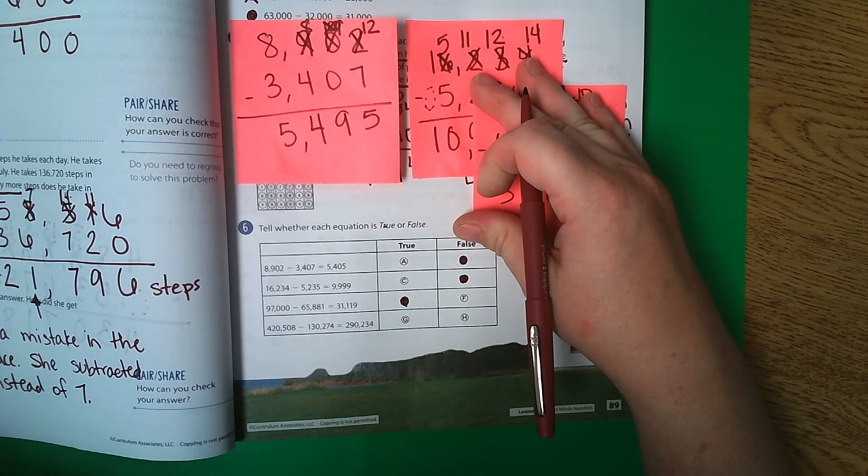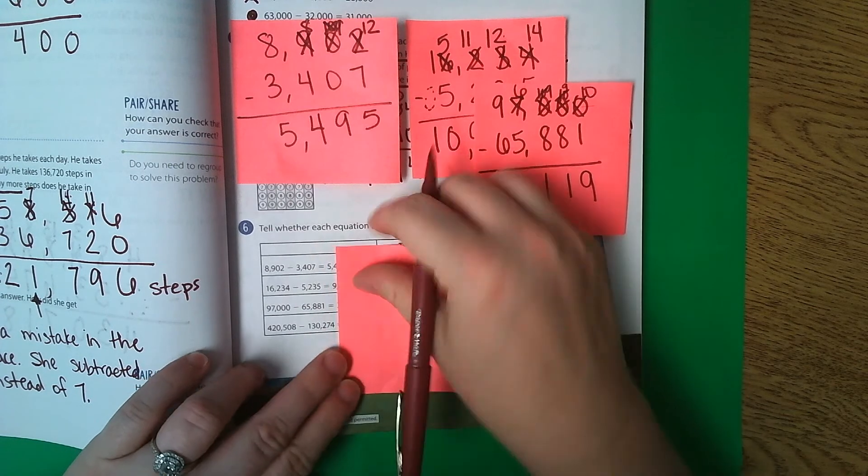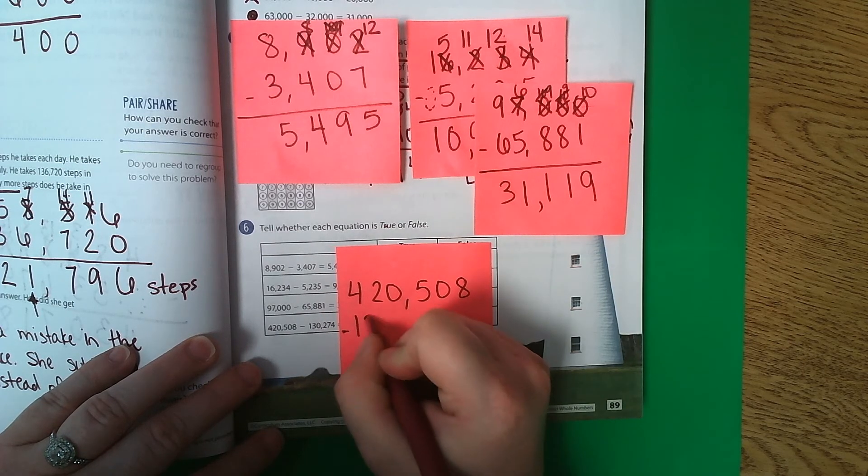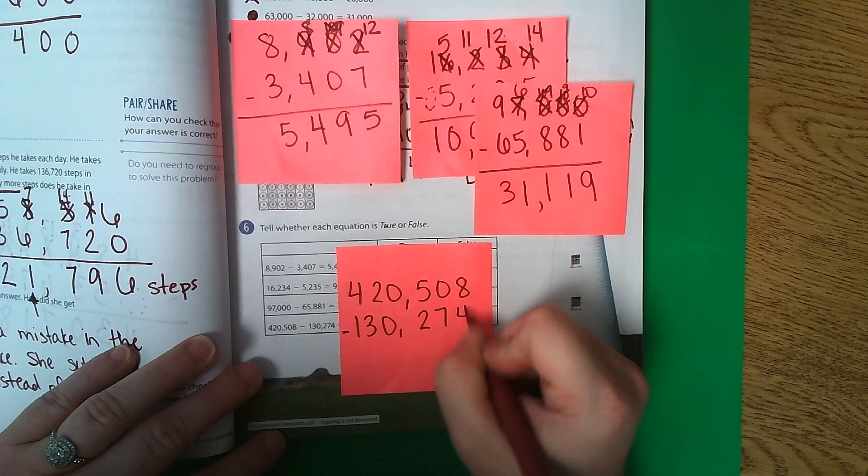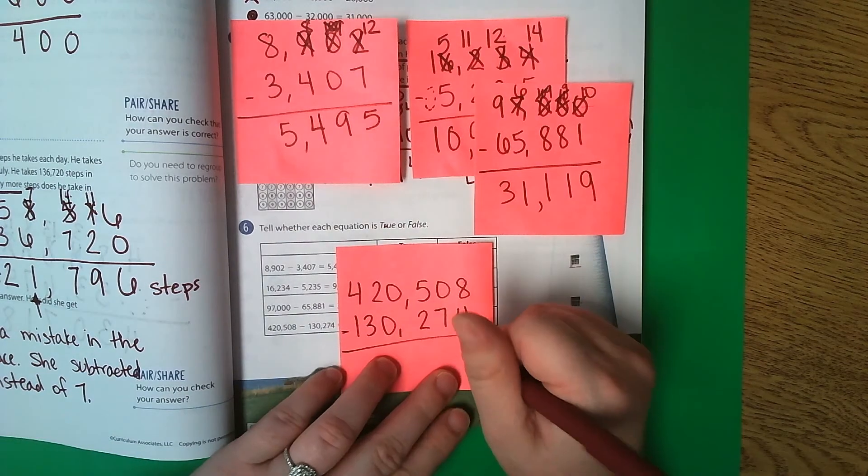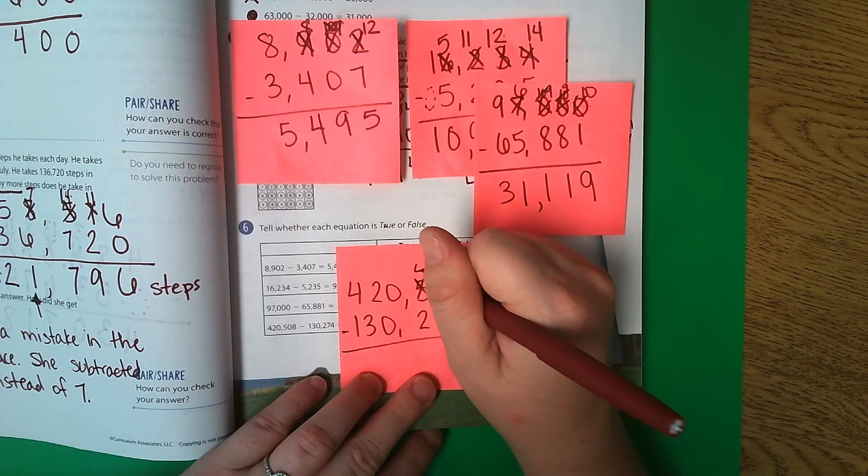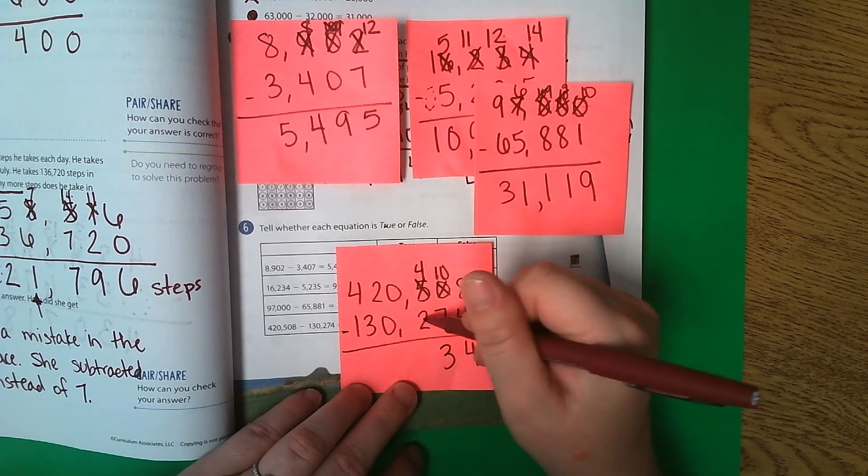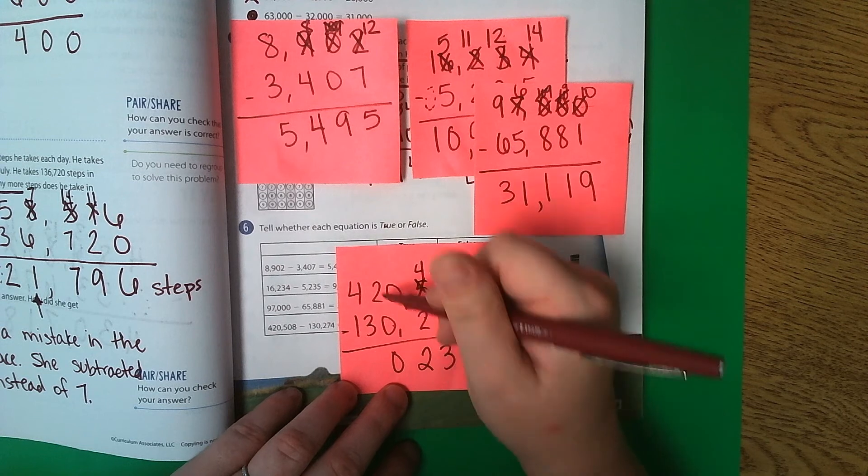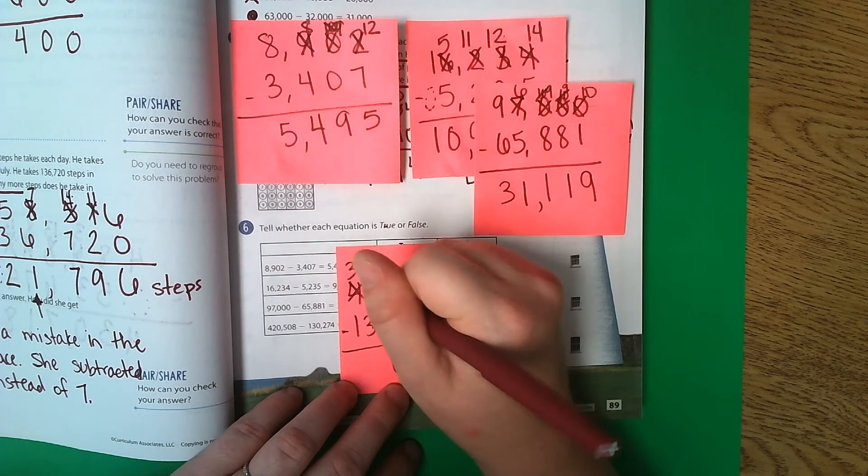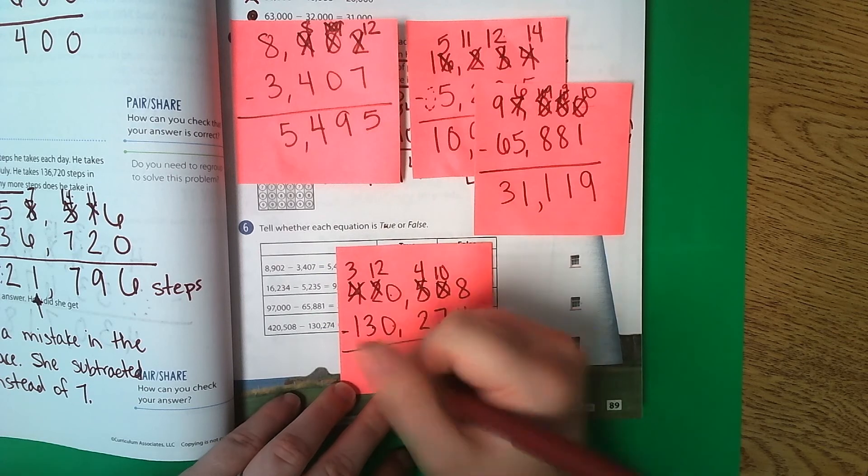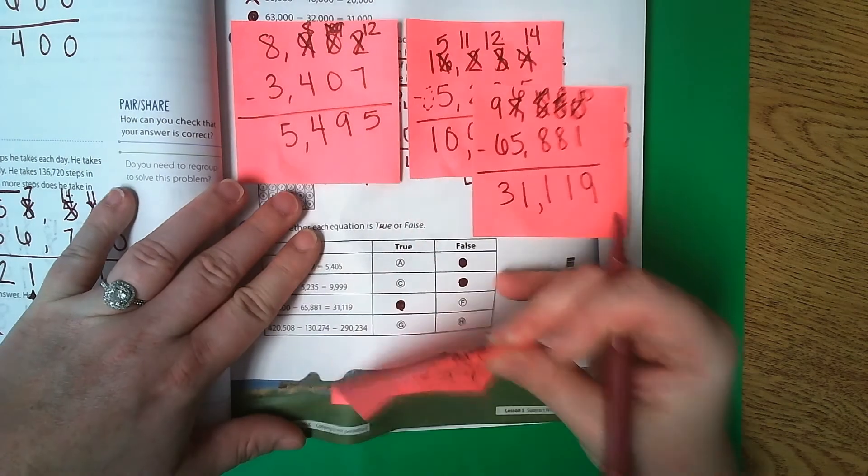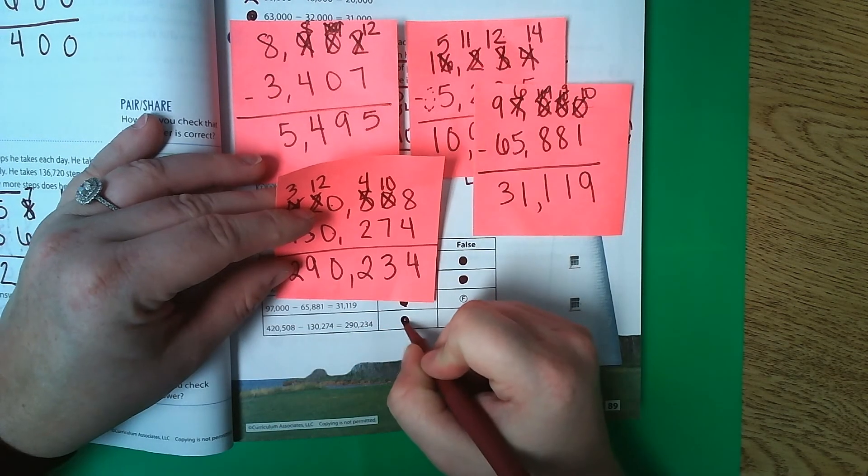Last one. 420,508 minus 130,274. 8 minus 4 is 4. 0 minus 7, I can't do that. So this becomes a 4, this becomes a 10. 10 minus 7 is 3. 4 minus 2 is 2. 0 minus 0 is 0. 2 minus 3, I can't do that. So it becomes a 12. 12 minus 3 is 9. And 3 minus 1 is 2. So your answer should be 290,234. And that answer is correct.